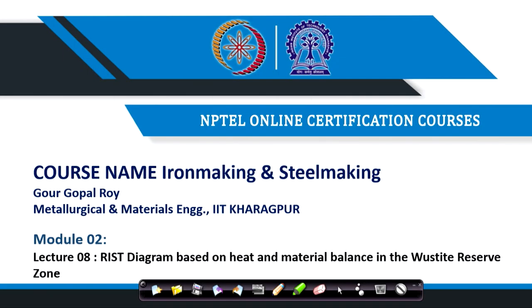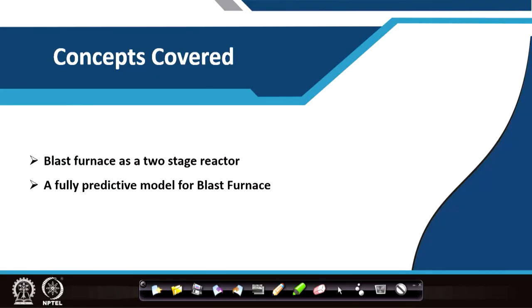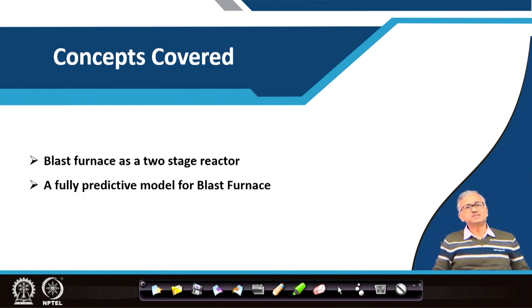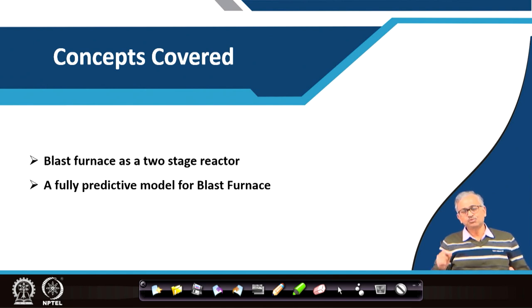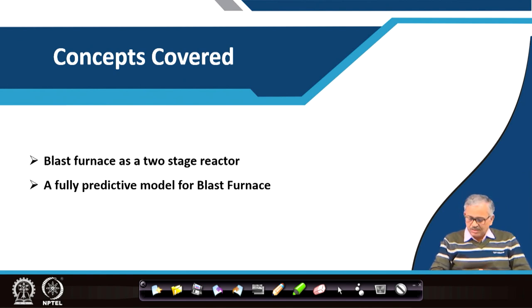Welcome, this is the third lecture on the Rist Diagram and the heat and material balance for blast furnace ironmaking. This lecture will cover the Rist Diagram based on heat and material balance in the wüstite reserve zone. The basic concept covers the blast furnace as a two-stage reactor, which is very important. We will develop a fully predictive model — the operating line — with two fixed points, and from there calculate the minimum coke rate.